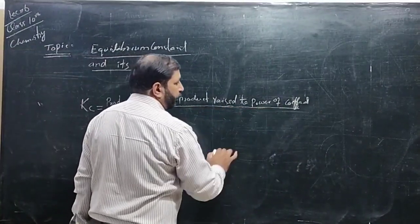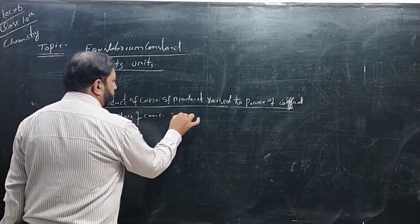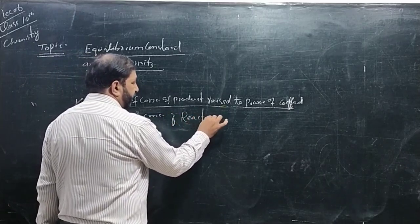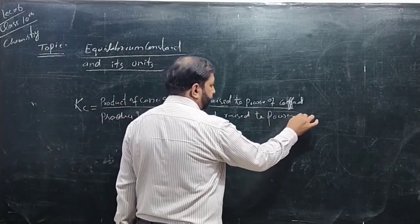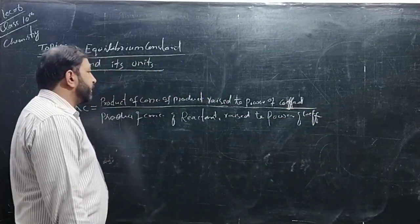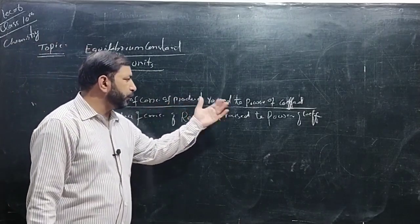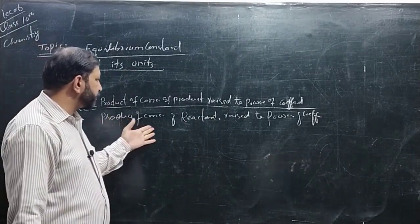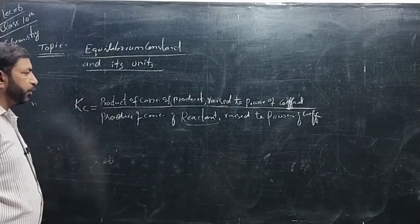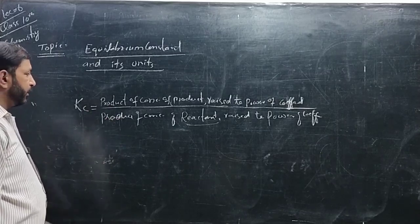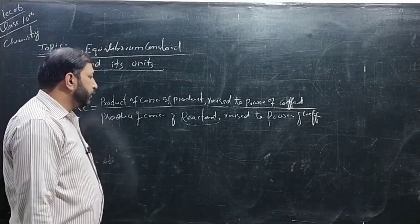The equilibrium constant Kc is defined as the product of concentration of products raised to the power of their coefficients, divided by the product of concentration of reactants raised to the power of their coefficients. So products are taken as numerators and reactants are taken as denominators. It is conventional to write products in the numerator and reactants in the denominator.